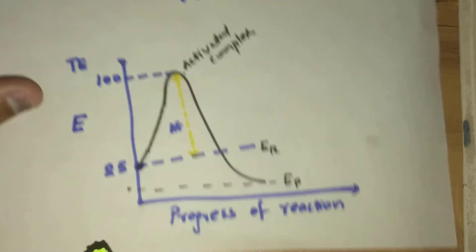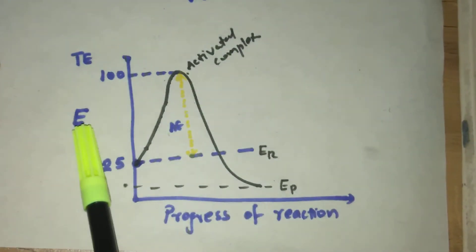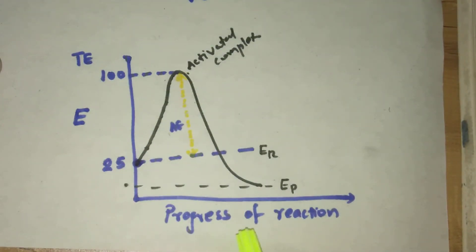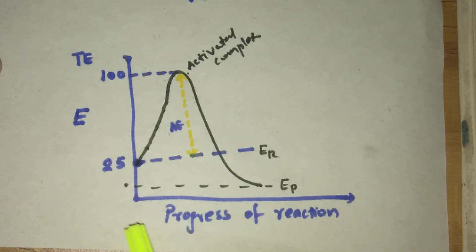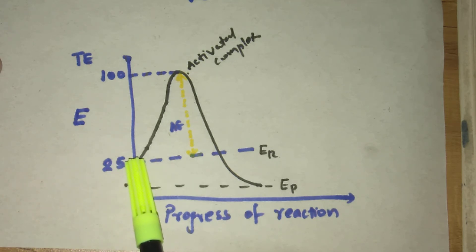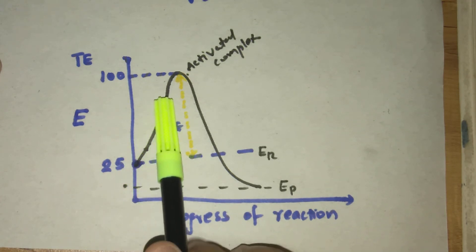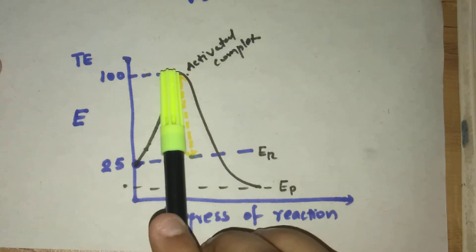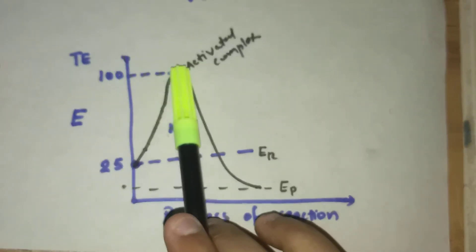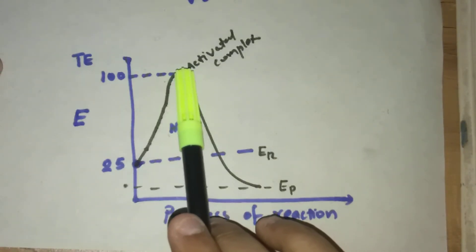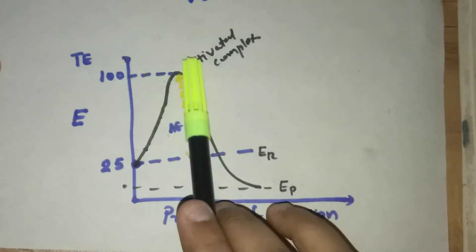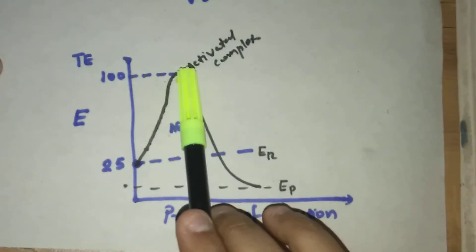Let us look at the graph. On the y-axis is energy, and on the x-axis is the progress of reaction, also called reaction coordinates. The 25 kilojoule level represents the reactant energy. As energy increases, at a certain point effective collision takes place, and the reactants are converted into an activated complex. The activated complex is an unstable form, and the corresponding energy is the threshold energy.